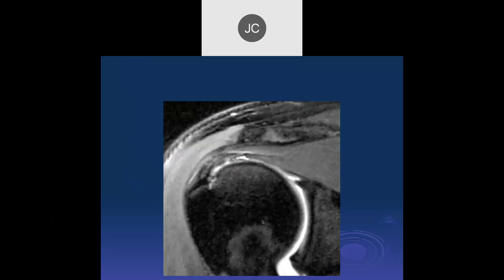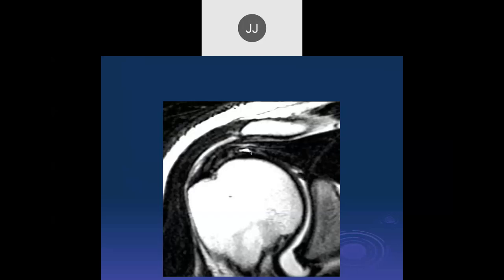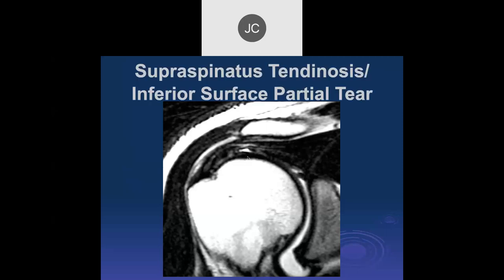Here's another cut. There's some signal getting closer to the musculotendinous junction near the articular surface — T2 bright. Another tear at the musculotendinous junction. So I think we're seeing low-grade partial tears of the joint side or inferior surface, and a little partial tear right at the musculotendinous junction. This is probably predominantly involving the tendon rather than the muscle like we saw before.